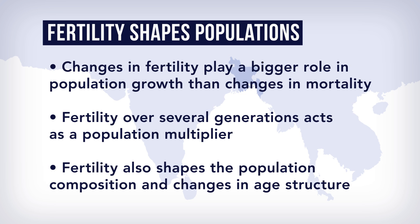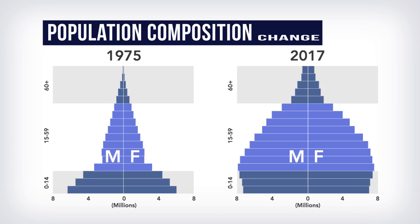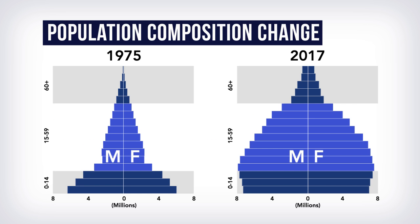Fertility also shapes population composition and changes in age structure. Over the past 40 years, the shape and size of the population of Bangladesh changed. Its base got wider due to continuous natural growth between annual births and deaths, and we observe aging birth cohorts and growth of an aging population.